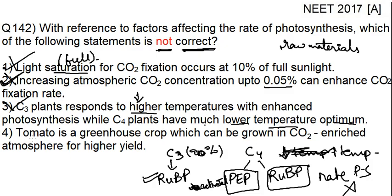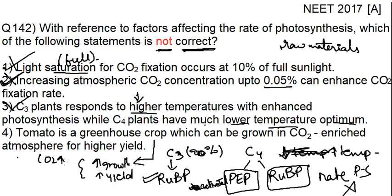Let us discuss the fourth option as well. Tomato is a greenhouse crop. A greenhouse crop is one that will show increased growth and increased yield when CO2 is increased. CO2 is the most important greenhouse gas, and that is why it is known as a greenhouse crop — because an increase in CO2 will increase the growth and yield of that crop. So tomato is a greenhouse crop that can be grown in a CO2-enriched atmosphere for higher yield. This is correct, and tomato is an example of a C3 plant.